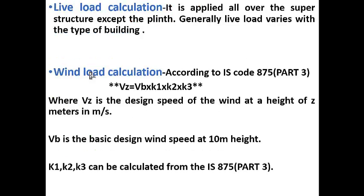Live load is externally applied all over the superstructure. Generally, live load varies with the type of building. According to the IS codes, live load is taken as 2 kN per meter square. Wind load can be calculated from the formula: VZ = VB × K1 × K2 × K3, from IS code 875 Part 3, where VZ is the design wind speed at height z meters in meters per second, VB is the basic design wind speed at 10 meter height, and K1, K2, K3 can be calculated from the IS codes.